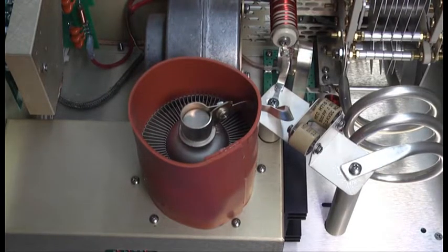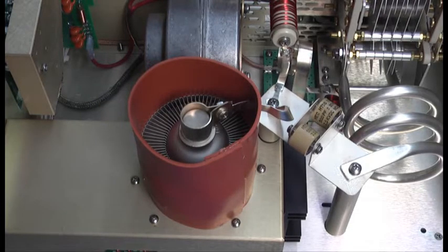So that's about it. That's the removal and replacement of a 4CX1500B tube in the Alpha linear amplifier. Thanks a lot for watching.